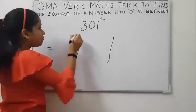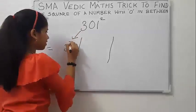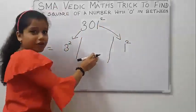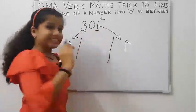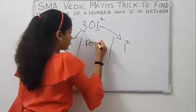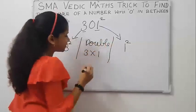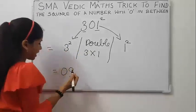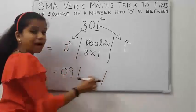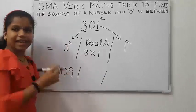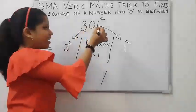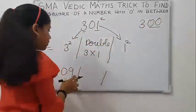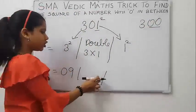To find the left part, we have to find the square of 3. And in the right part, we have to find the square of 1. 3 square is 9, and we will write it as 09. The left part, right part, and middle part also have to be written in two-digit format, as 301 square is closer to 300, and 300 has two zeros.